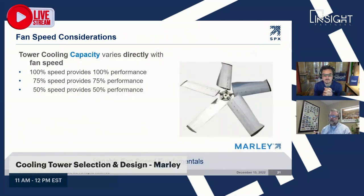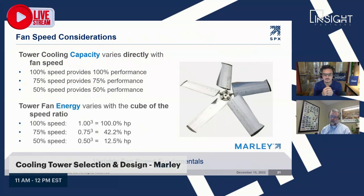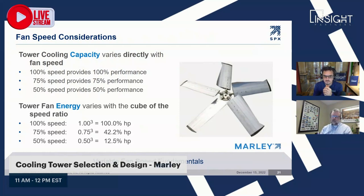From a system optimization energy standpoint, when we use a VFD and slow the fans down roughly 50% fan speed, we still provide 50% performance. The big benefit is that at 50% speed, you're only using one-eighth of the horsepower — big energy savings. VFDs are widely accepted and used on a majority of projects today. Additional benefits include mechanical equipment lasting longer, and significant sound reductions since the fan ramps up and down rather than switching on and off abruptly.